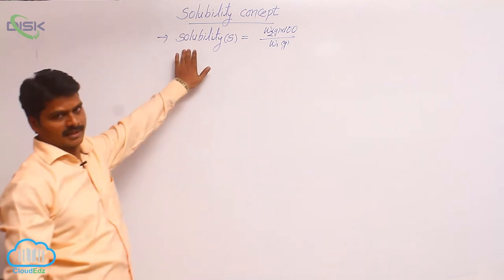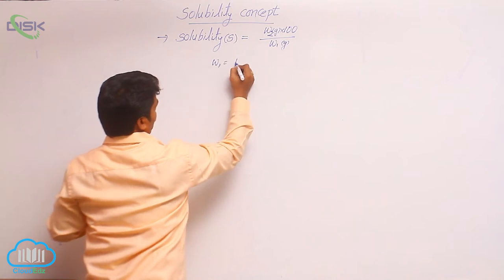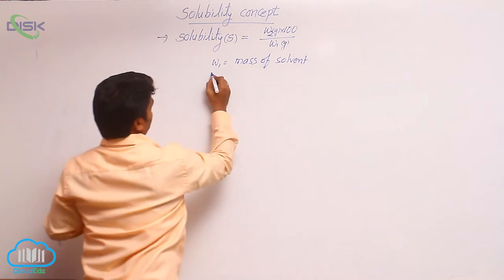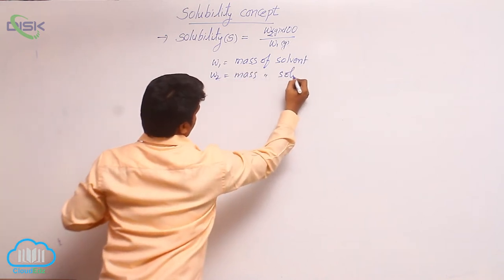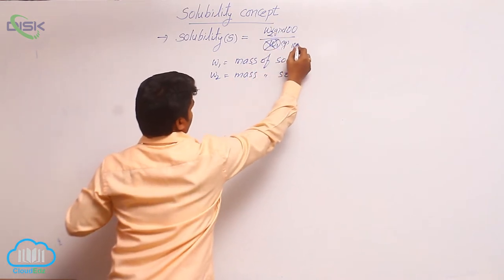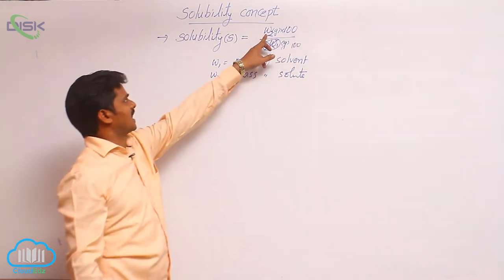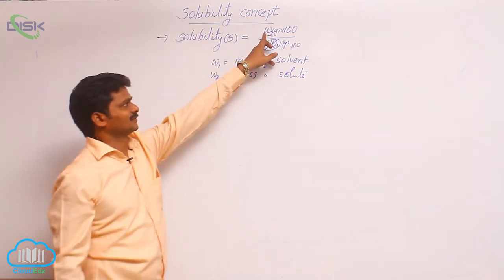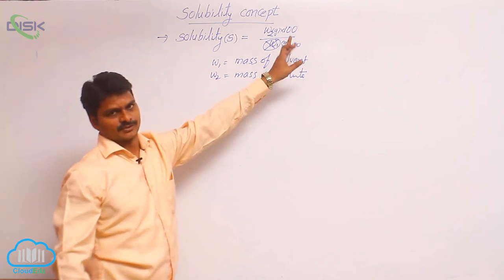How do we define solubility? W₁ is the weight or mass of solvent in grams, and W₂ is the mass of solute in grams. If W₁ is taken as 100 grams, then the 100s cancel and W₂ is nothing but solubility. So solubility is the mass of solute present in 100 grams of a solvent.